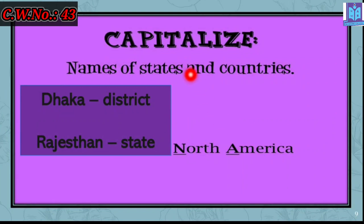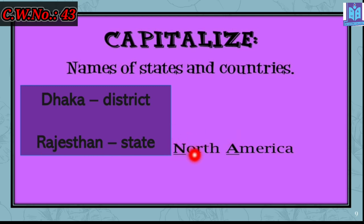Now, the names of any states or countries — and even district names — must be capitalized. Like Dhaka is the name of a district, so you write it with a capital D. Rajasthan is the name of a state of India, so it must be capital. And for a country's name, like Bangladesh, you write B in capital letter. If you write India, I must be capital.